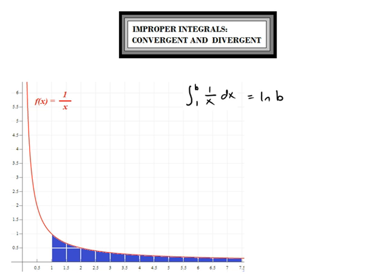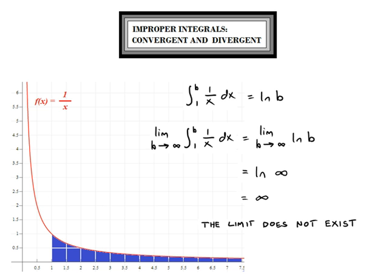No matter what the value of b is, the area under the graph will be the natural log of b. So the definite integral from 1 to 1 billion is going to equal the natural log of 1 billion. The limit of this definite integral as b approaches infinity is equal to the limit of the natural log of b, and this limit extends forever — it does not exist. This is the natural log of infinity, which increases without bound.